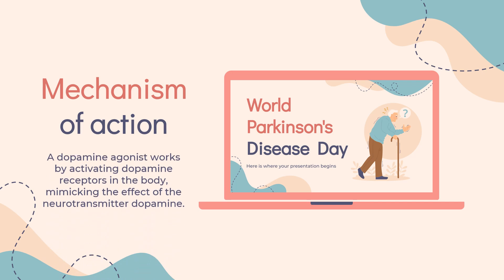Mechanism of action: Rotigotine, a member of the dopamine agonist class of drugs, is delivered continuously through the skin transdermally using a silicone-based patch that is replaced every 24 hours. A dopamine agonist works by activating dopamine receptors in the body, mimicking the effect of the neurotransmitter dopamine. The precise mechanism of action of Rotigotine as a treatment for restless leg syndrome is unknown but is thought to be related to its ability to stimulate dopamine.